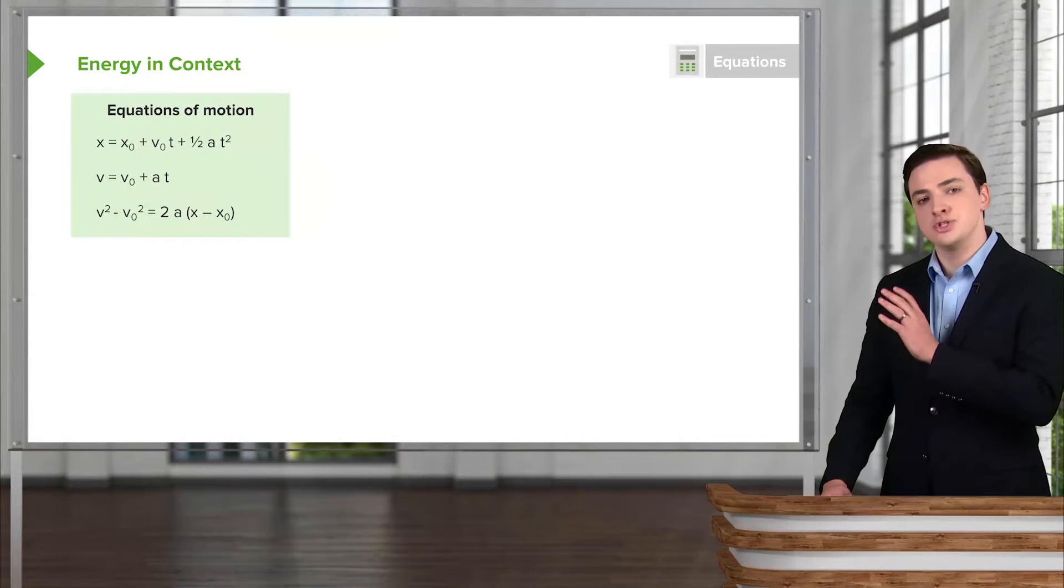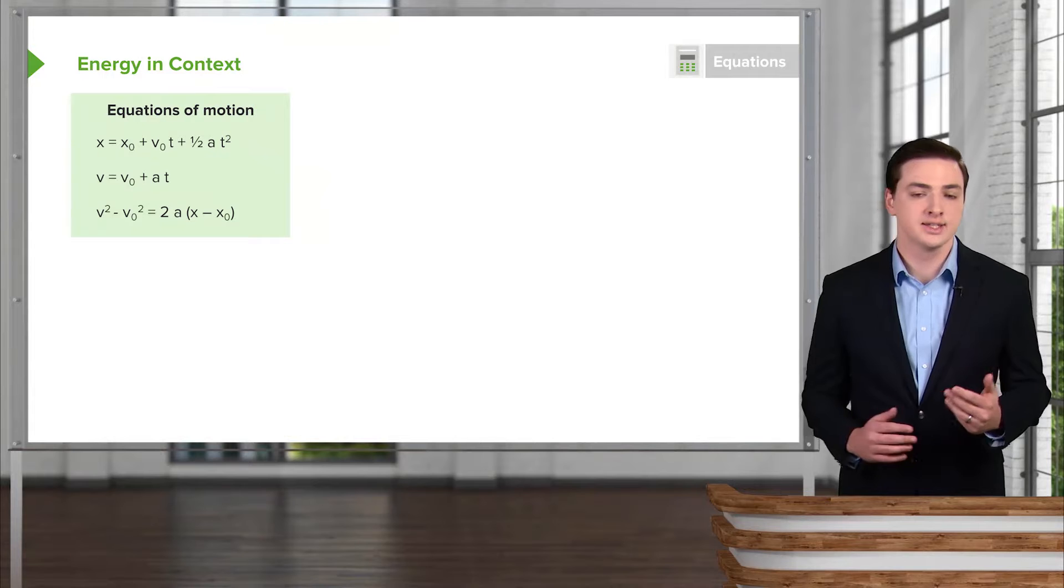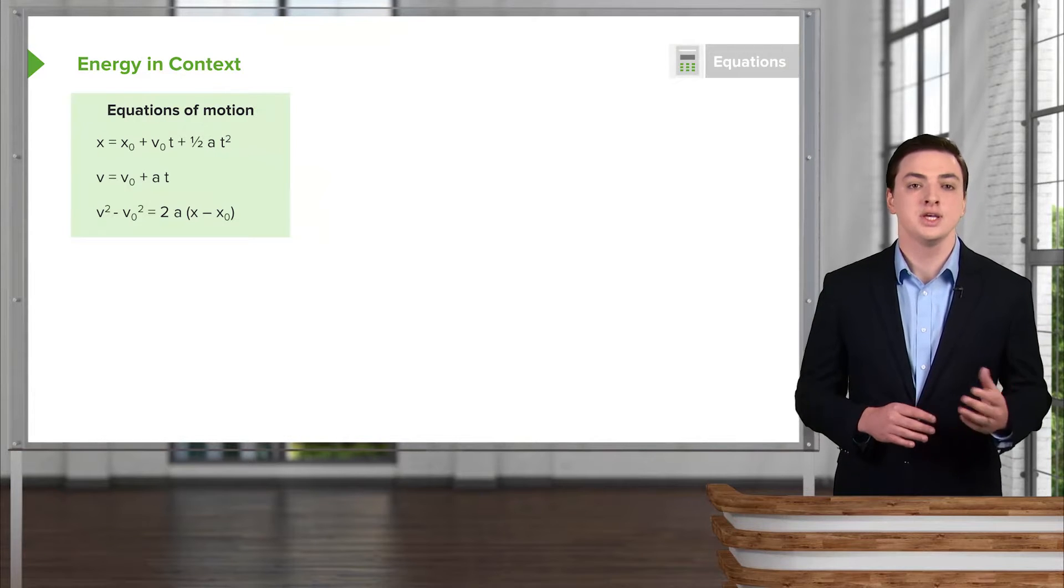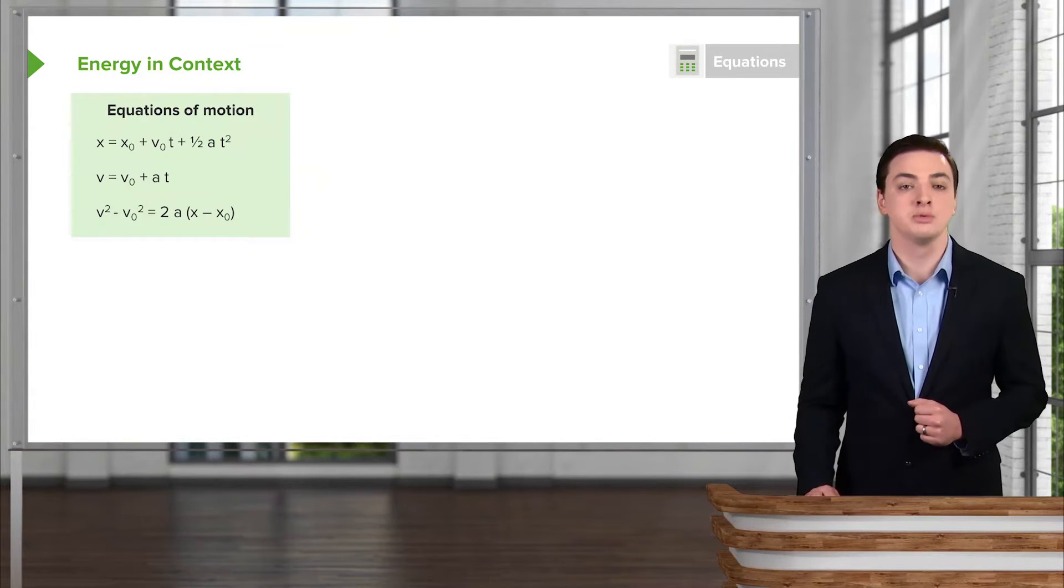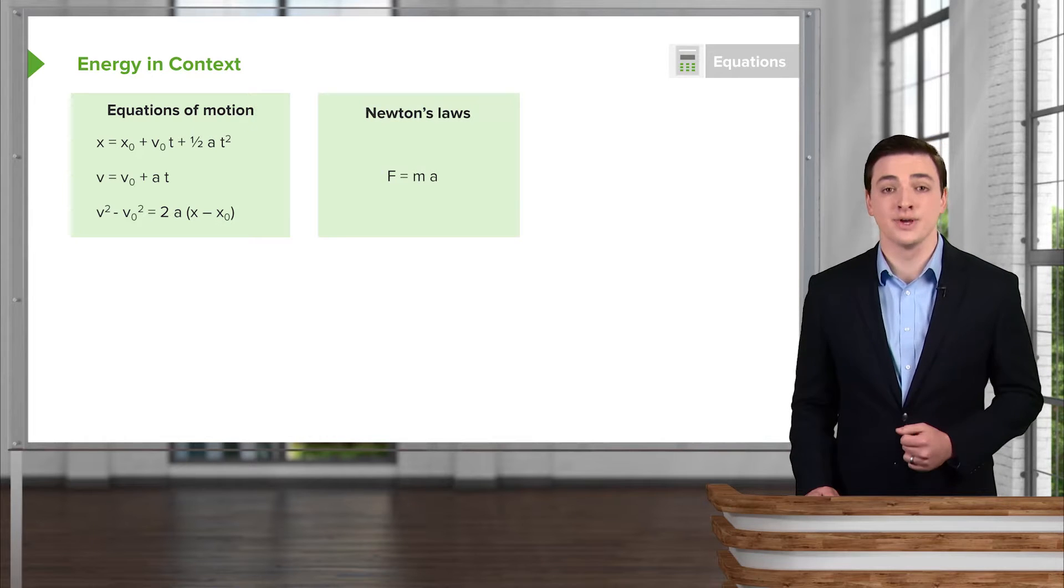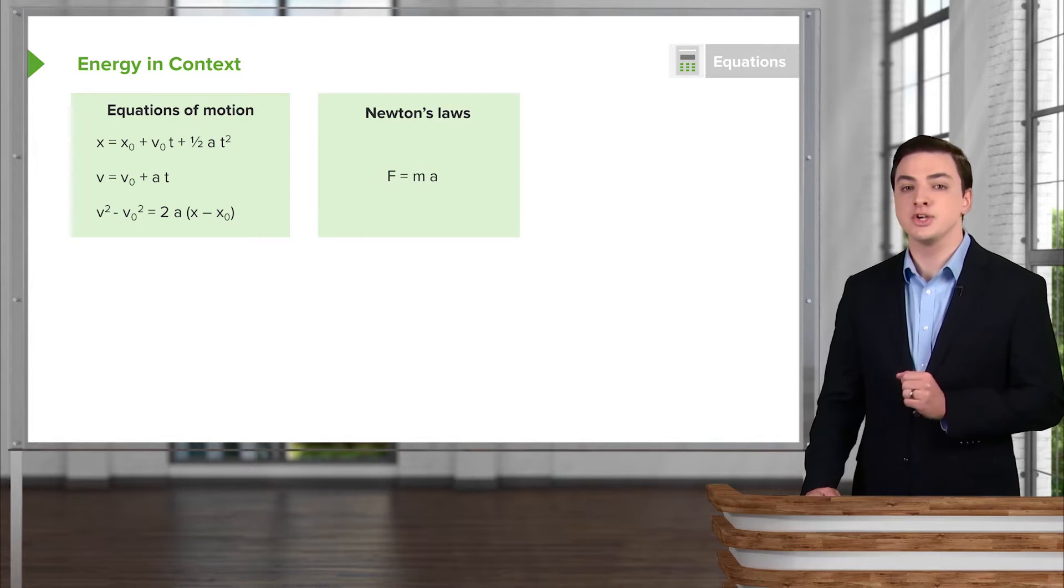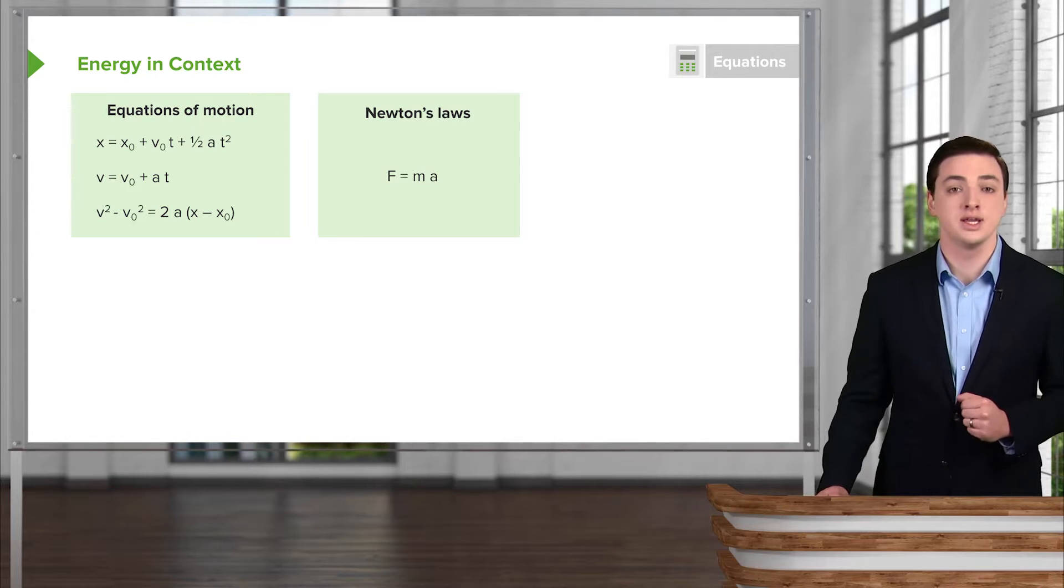We started with the equations of motion and introduced these three equations, which describe how positions, velocities, and accelerations are related to each other as an object moves through time from one position to another. We then asked how these accelerations arose, where they came from, and went through Newton's laws, especially Newton's second law, as we see it here, F equals ma.